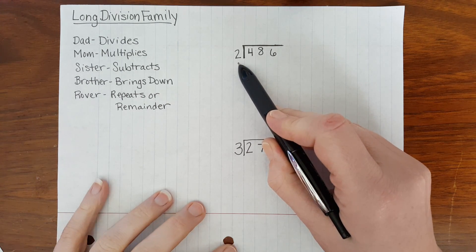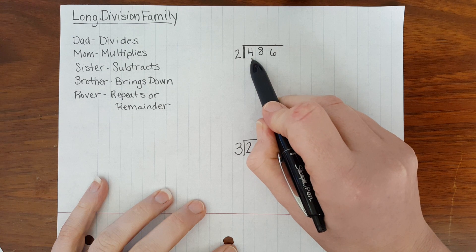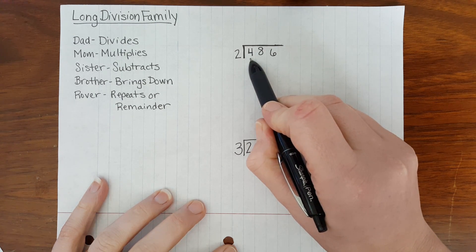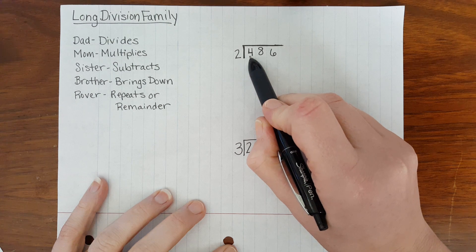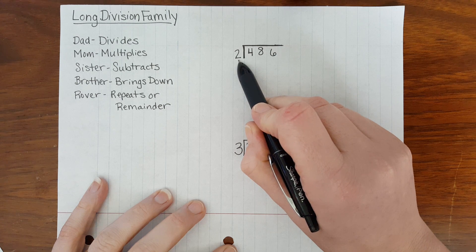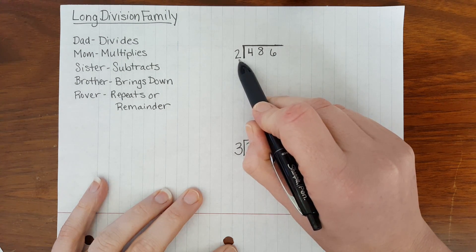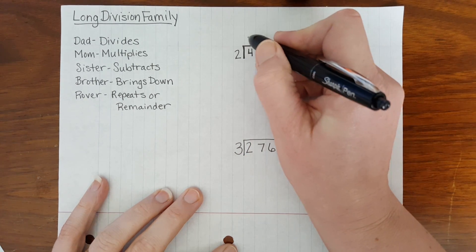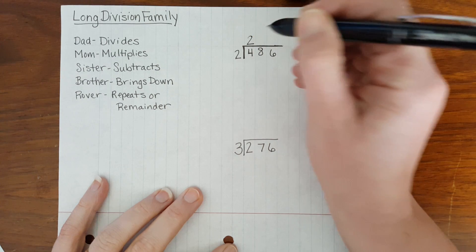The first step is dad dividing. Dad looks at the first digit in our dividend and says how many or what is 4 divided by 2. 4 divided by 2 is a basic math fact. 4 divided by 2 is 2. So dad puts the 2 above the 4 in the quotient.